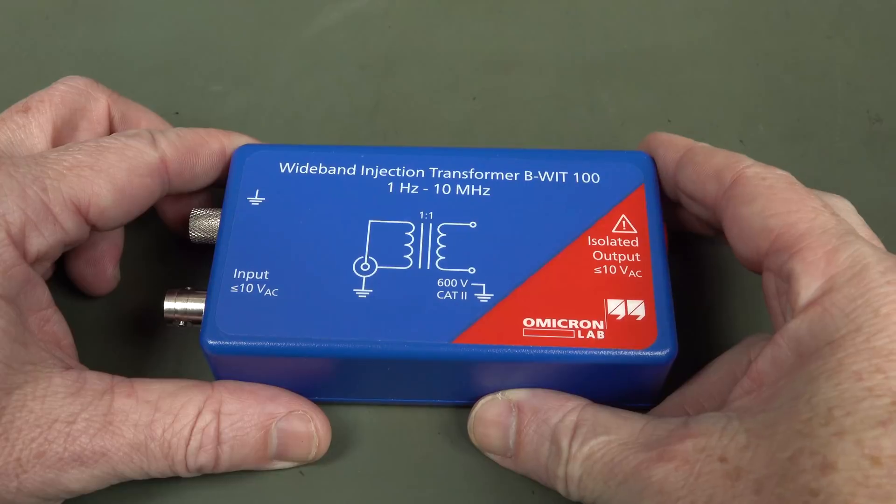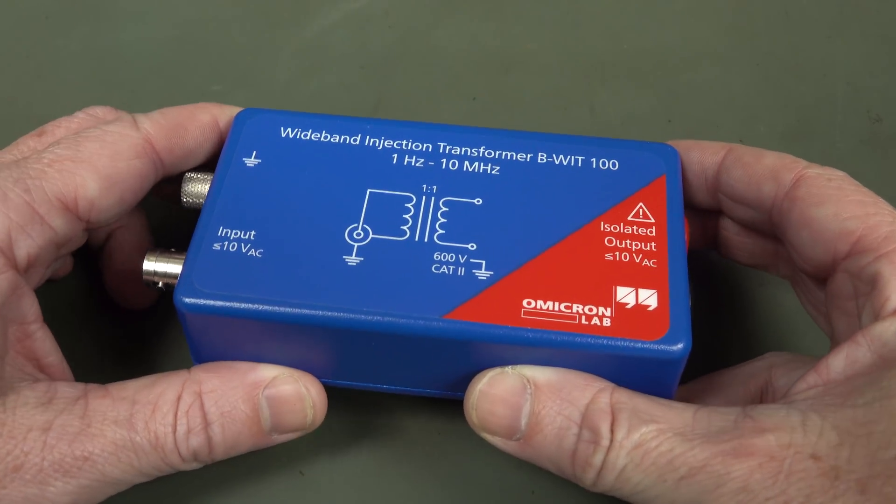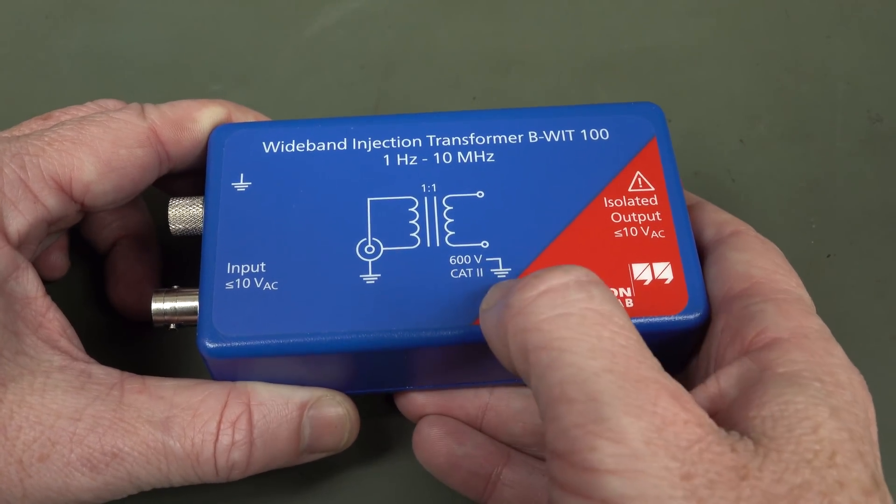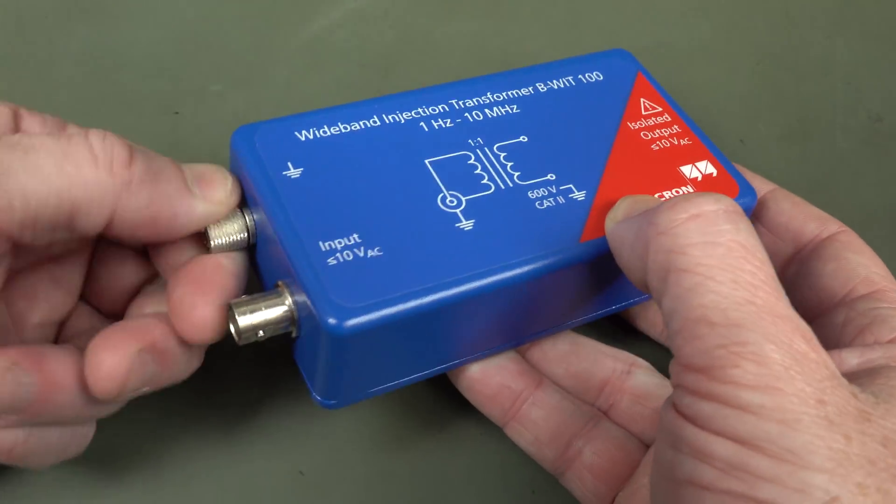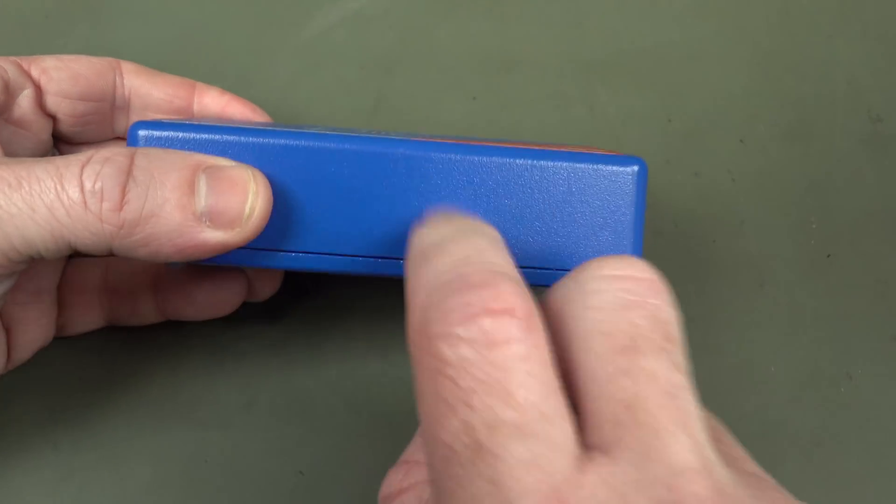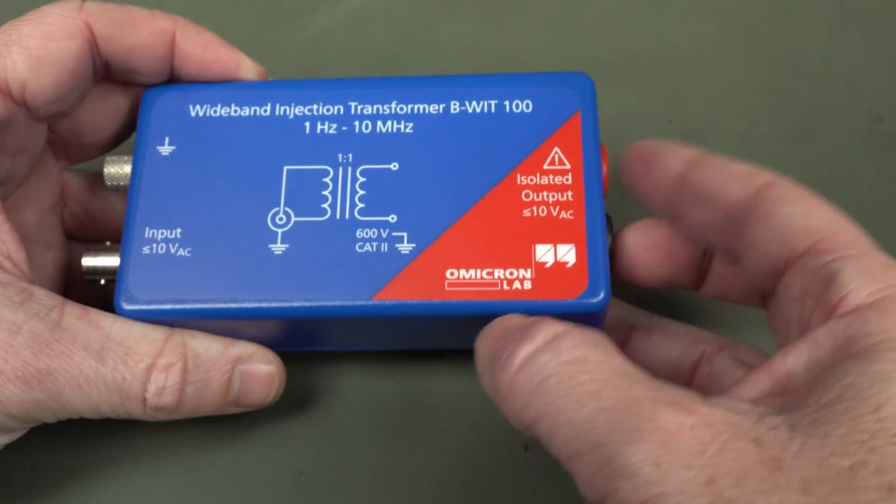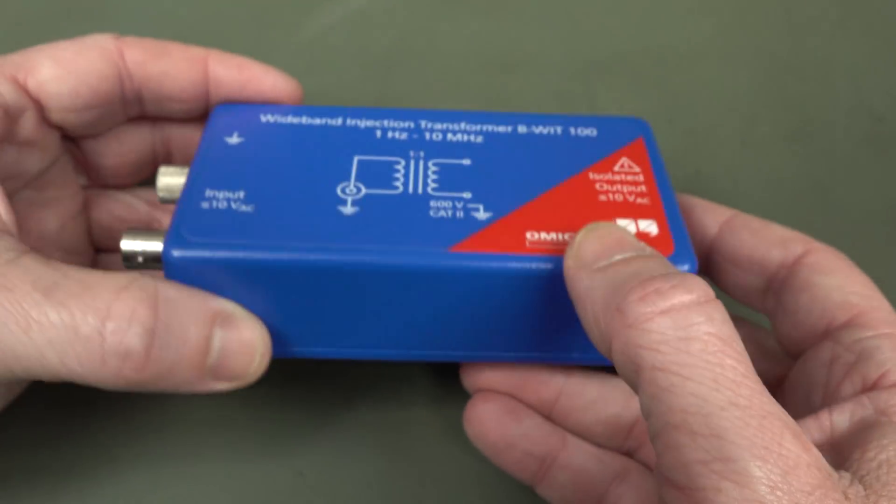I want to do this first, so we've got the BWIT 100, 1 hertz to 10 megahertz wideband injection transformer. It's just a 1 to 1 transformer, 600 volt CAT 2 isolation, just B and C input, just the earth terminal which would just be the outer case here and just banana plugs, a balanced output on this side, isolated. So let's take a look.